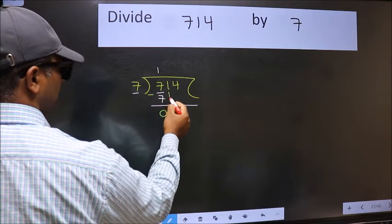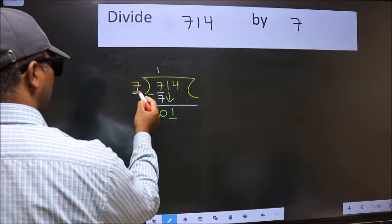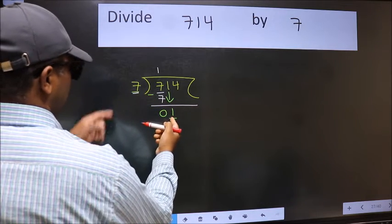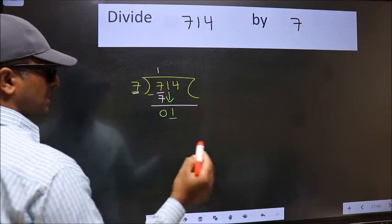After this, bring down the beside number. So 1 down. Now here we have 1 and here 7. 1 is smaller than 7. So we should bring down the second number.